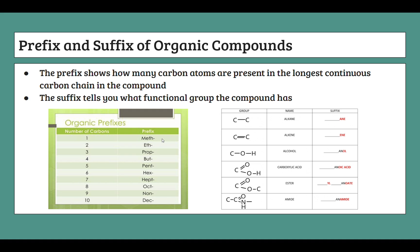Let's look at the prefixes first. The prefix indicates how many carbons are in the longest continuous carbon chain. One carbon is meth-, two is eth-, three is prop-, four is but-, five is pent-, six is hex-, and so on up to ten. These are quite similar to prefixes you might know from mathematics — pent, hex, hept, oct, non, dec should be familiar. The key ones to remember are meth, eth, prop, and but, as most molecules you'll see have one of these four prefixes.